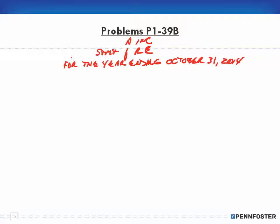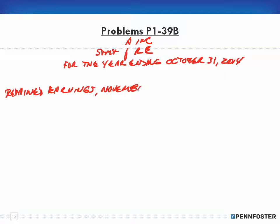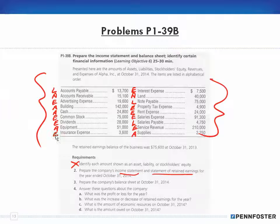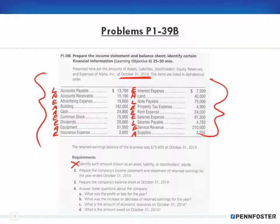When doing these financial statements, it helps to go through a step-by-step process and fill in the information so you don't miss anything. First, put in the heading. Then we create our beginning and end dates. So I have retained earnings with the beginning date of November 1st, 2013.